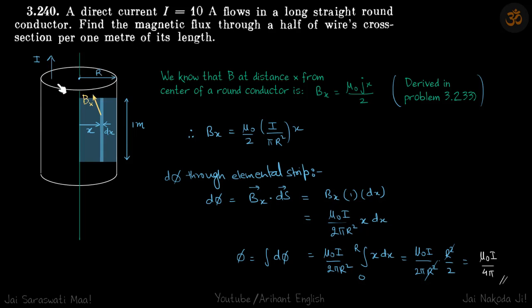Here we are given a circular conductor, a round conductor, and a current I is flowing through it. We are to find the magnetic flux through half a wire's cross-section per one meter of its length. This will be the full cross-section and this is the half cross-section.